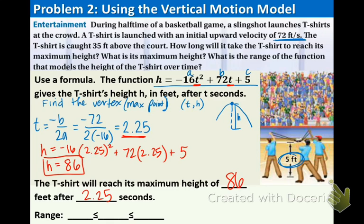Now they're asking what is the range of this function that models the height of the t-shirt. Well, we talked about this in the beginning. The t-shirt, look at the picture over here. The t-shirt is starting at 5 feet. So that means that is the lowest height that that t-shirt can reach. Because that's where it's starting. h is going to be the variable. And then 86 is the maximum height. So that is the height of the t-shirt during its flight.